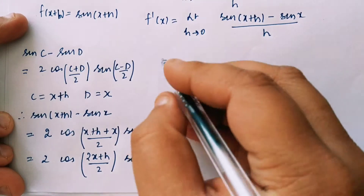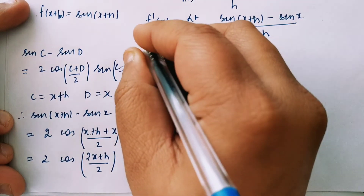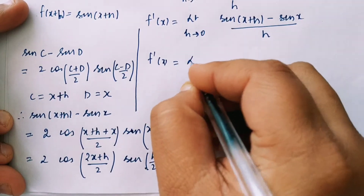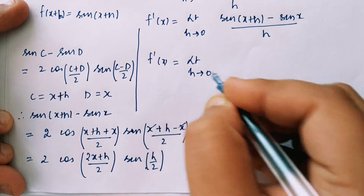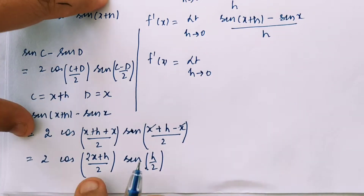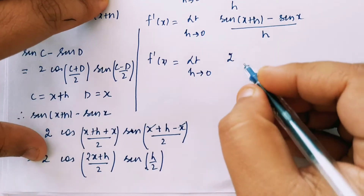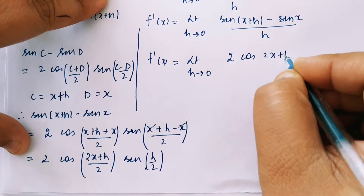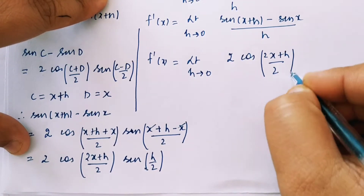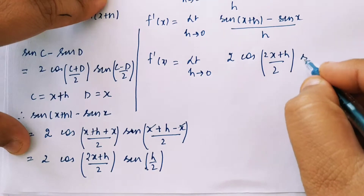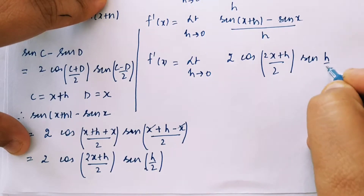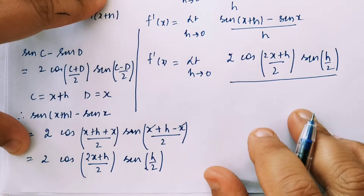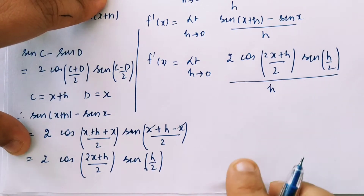So my f'(x) will become: limit h tends to 0 of [sin(x+h) minus sin x], that is 2 cos((2x+h)/2) times sin(h/2), use brackets to avoid mistakes, divided by h.